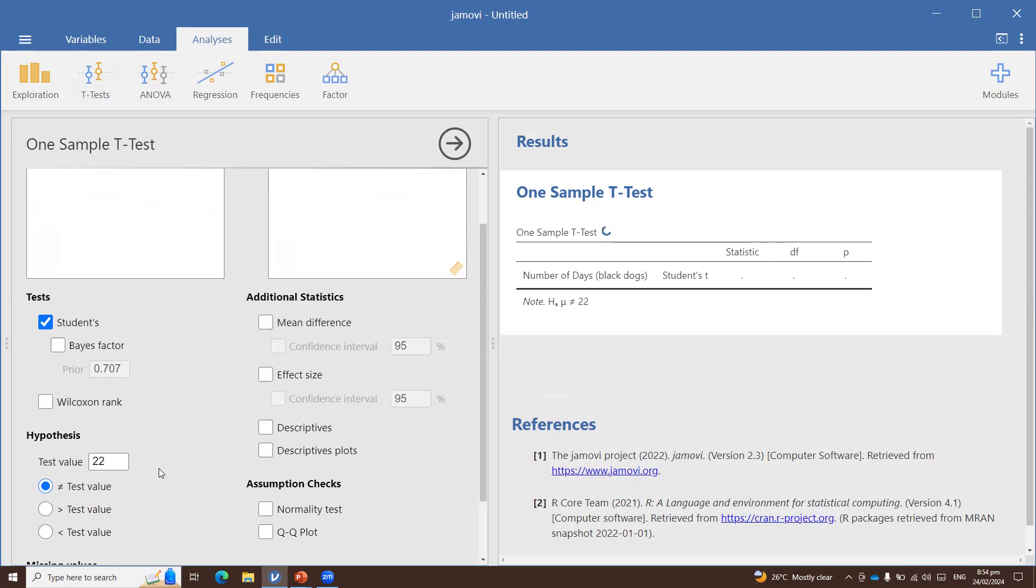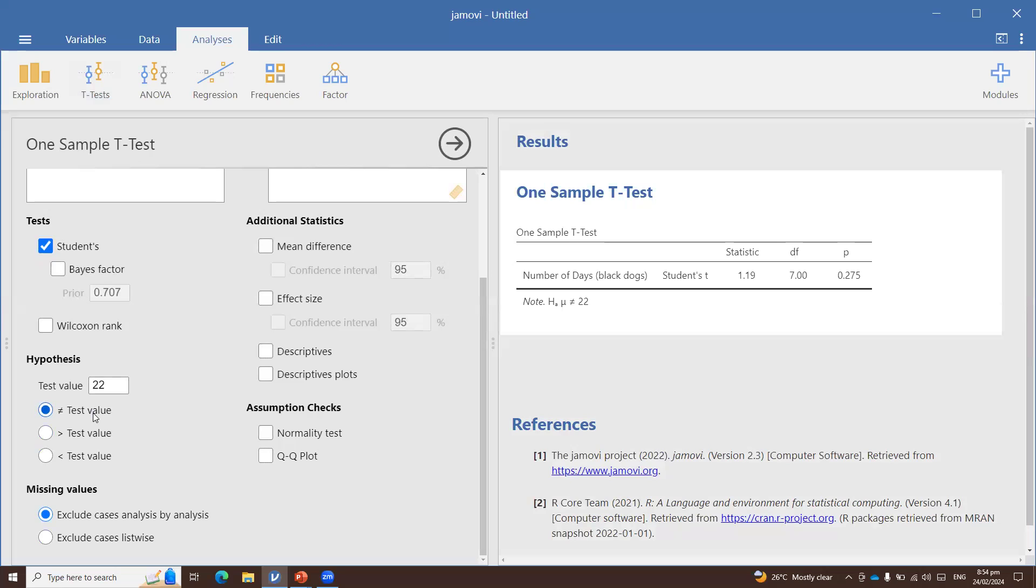And here under hypothesis, you can specify whether you are testing a two-tailed hypothesis or a one-tailed hypothesis. So in this case, we're testing a two-tailed hypothesis, so I selected the first one. But if you hypothesize that the mean value of the sample will be greater than 22, then you can select the third one.